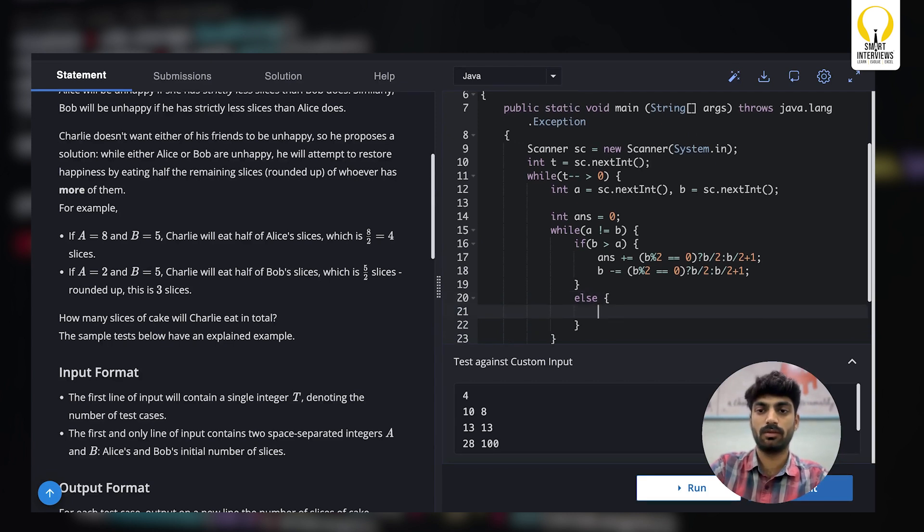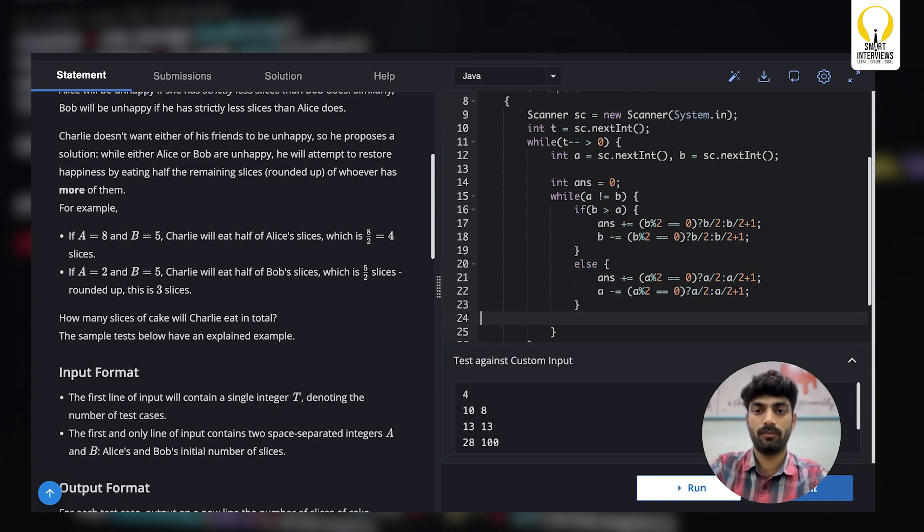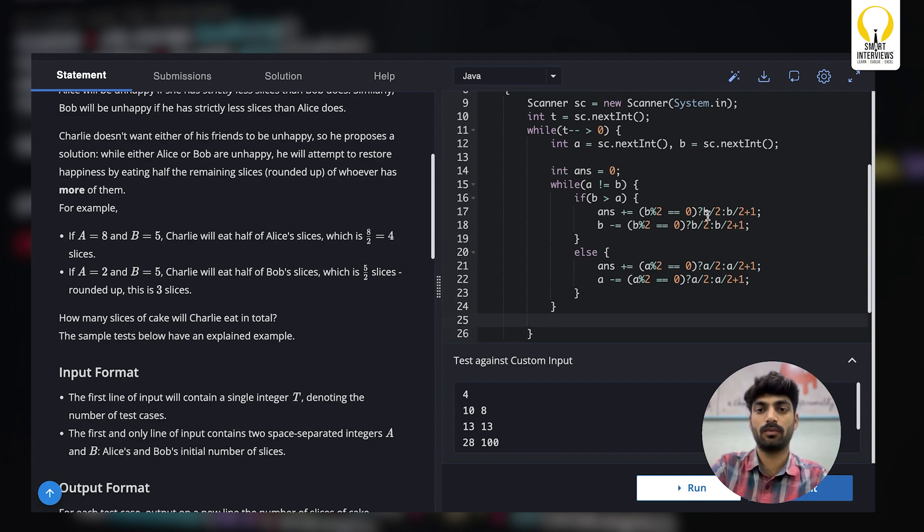And if Alice is unhappy we should also take care of if Bob is unhappy. Then answer, you will add half of it. Charlie will eat half of Alice's cake. So if it is even do the same thing, if it is even just give this value or else do this and remove the same part from Alice's cake as well.